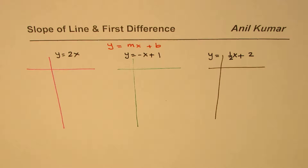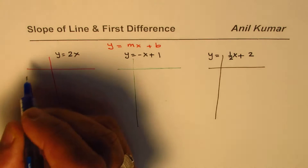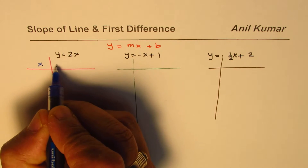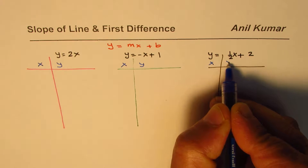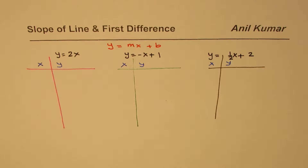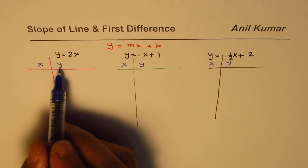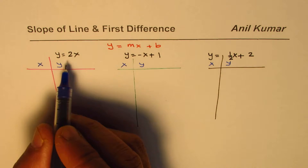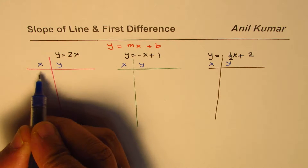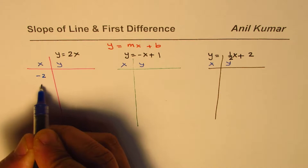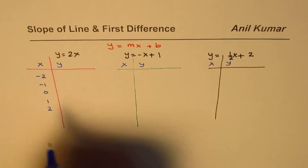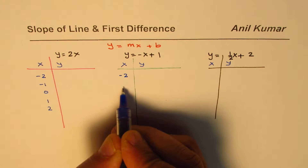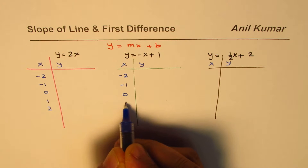Now we will check what is the first difference for these lines. To find the first difference we'll consider a few points on each line, making a table of values for input and output, where x is the independent variable and y is the dependent variable. For the first two lines, the best points to consider are x = -2, -1, 0, 1, and 2.